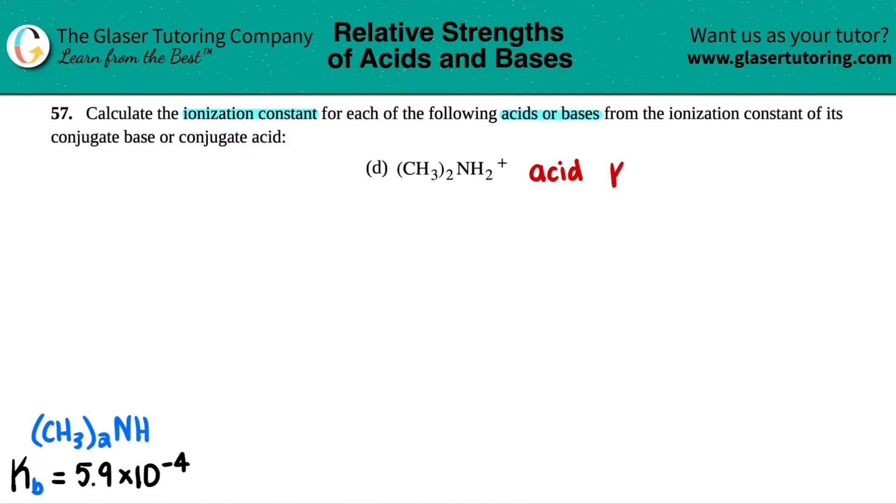Because of that, we would be finding the Ka value, A for acid. That's the ionization constant. I went to the back of the textbook and found the corresponding conjugate base. Remember, going from acid to base, you drop one hydrogen. So this 2 would drop to a 1. That has a Kb value of 5.9 times 10 to the negative fourth. So essentially, all we have to do is convert a Kb into a Ka value.